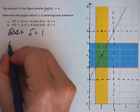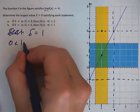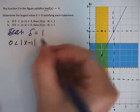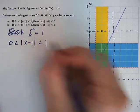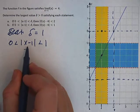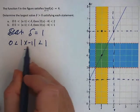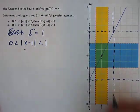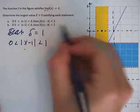So we could say this, 0 is less than x minus 1, absolute value, is less than 1. If this is true, if we are within 1 of x being right there on x equals 1, then this statement is true.